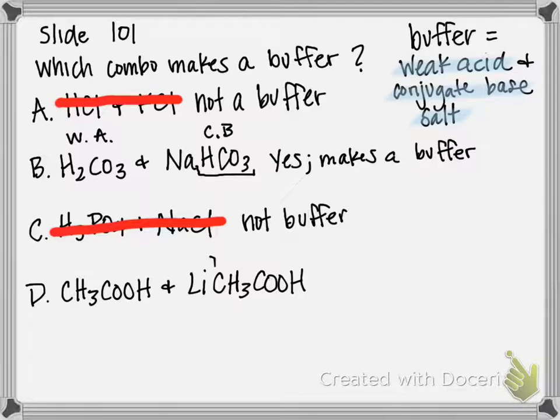For the last one, option D, this CH3COO—that's just another way to write the acetate ion. You might have also seen this written as C2H3O2. That's acetate, just another way to write it. The first component—if you look at the fifth weak acid down, that is acetic acid.